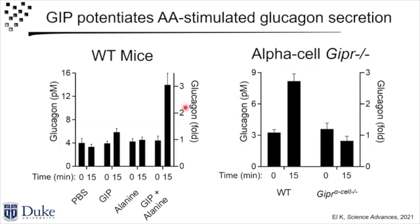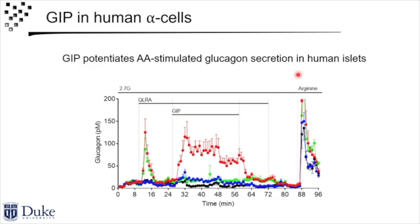We can see this in mice. Controls and GIP alone have a little effect; alanine alone is hard to measure because glucagon just doesn't circulate at very high concentrations from a tail measurement. But when you put them together, we see a clear three-fold increase in glucagon secretion. If we make a mouse with the GIP receptor deleted from alpha cells, it all goes away. We can also see this in human islets from non-diabetic donors — the same thing where alanine and GIP alone give a small effect on glucagon secretion, but there's a clear synergy when combined. This translates from mice to humans, with a lot more glucagon secretion simply because human islets have many more alpha cells.